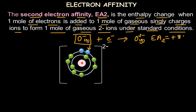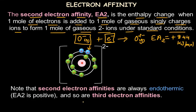The energy change to form a 2-minus ion — the second electron affinity — is endothermic with a positive value. For oxygen, Ea2 = +844 kJ/mol. This applies to most elements: adding a second electron to an already minus-1 charged ion requires energy because the repulsion from the existing negative charge makes the process endothermic. Similarly, the third electron affinity is also endothermic with a positive value.